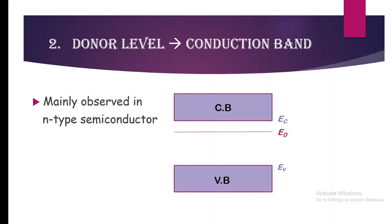The donor level lies just below the conduction band, and the donors — which are free electrons — get thermally ionized. As temperature increases, even at room temperature the electrons in the donor level get thermally ionized into the conduction band.